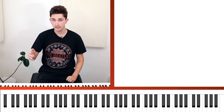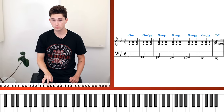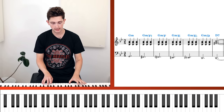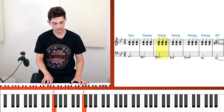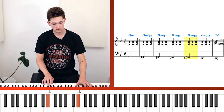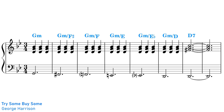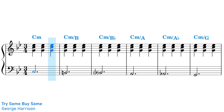We can also vary where in the chord the line cliché is being voiced. In "Try Some By Some" by George Harrison, the right hand of the piano stays still on a G minor chord, while the left hand along with the bass provides the line cliché by starting on the root note G and then moving down a semitone at a time. The song actually doubles up the line cliché — after the initial one built on G minor, we then go to the IV chord C minor and get another line cliché.